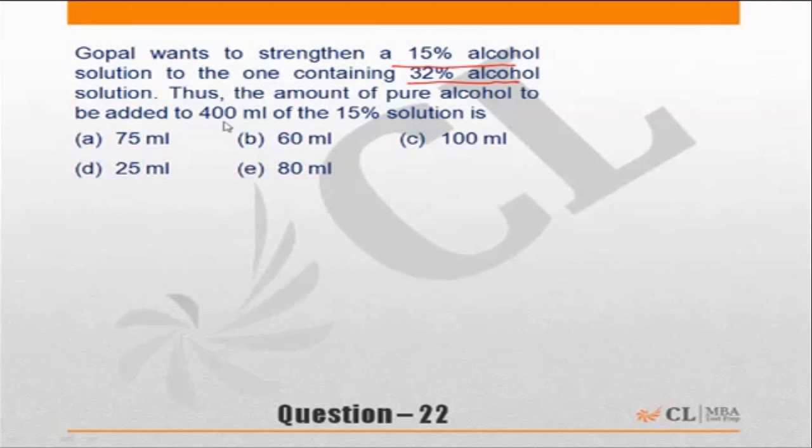to be added to 400 milliliters of 15% solution is what? You have a 15% alcohol solution you will mix with pure alcohol, which means 100% alcohol, such that the overall mixture will become 32% alcohol. This should be 32%. A simple question of allegation.